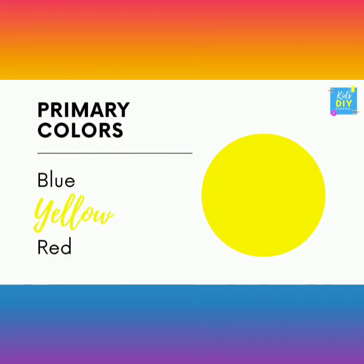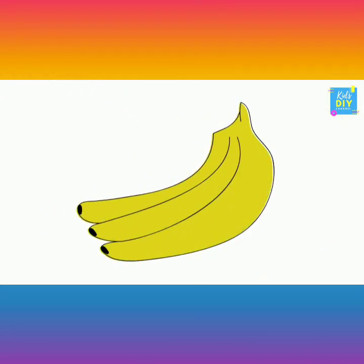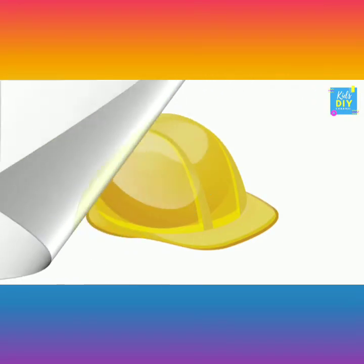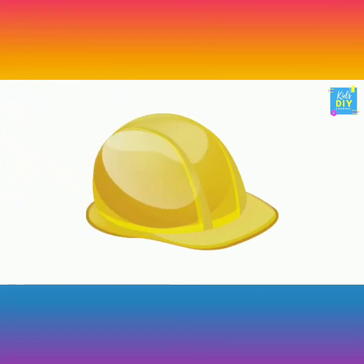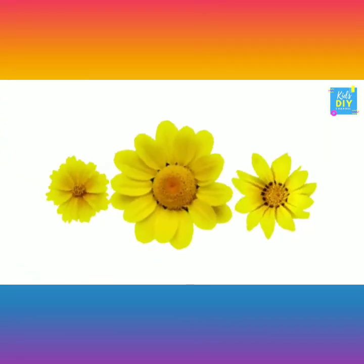The next primary color is yellow. The bananas are yellow. The head is yellow. And the flowers are yellow.